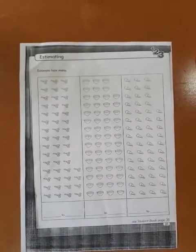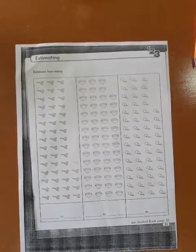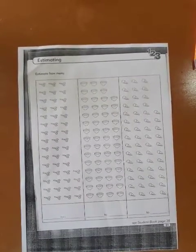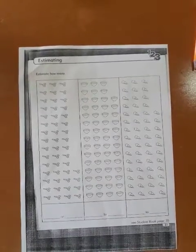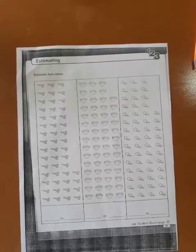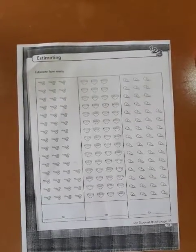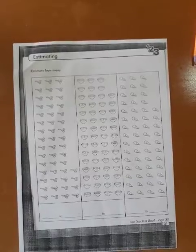Now remember we've been working only rounding to the nearest 10 or to the nearest 100. Now after looking at how many we have, then we are going to estimate either if it's closer to 10 or 100. We are going to find out.